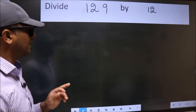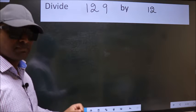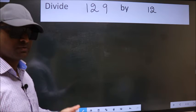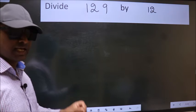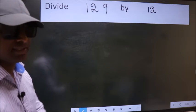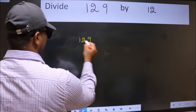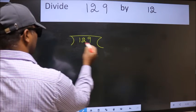Divide 129 by 12. While doing this division, many do this mistake. What is the mistake that they do? I will let you know, but before that we should frame it in this way: 129 here, 12 here.